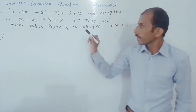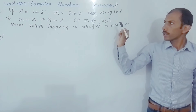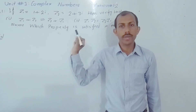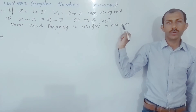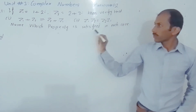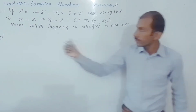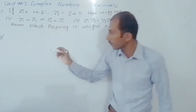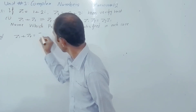So let's start. If Z1 is equal to 1 plus 2 iota and Z2 is equal to 2 plus 3 iota, then verify: part number one, Z1 plus Z2 is equal to Z2 plus Z1; and part number two, Z1 Z2 is equal to Z2 Z1. Also name which property is satisfied in each equation.